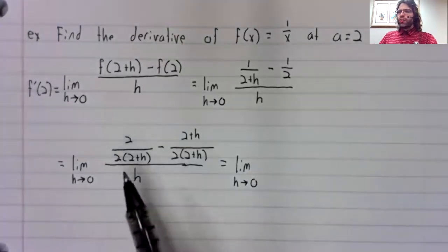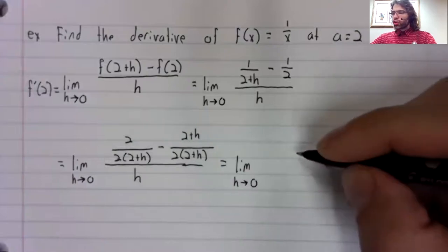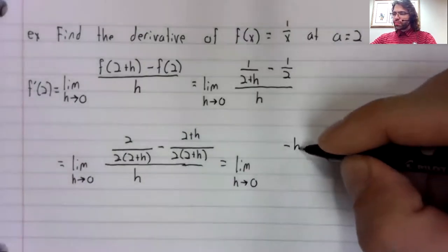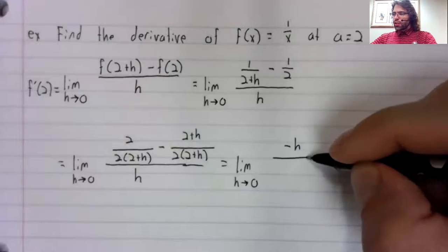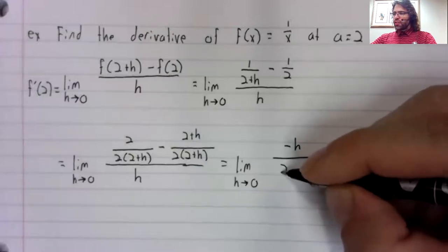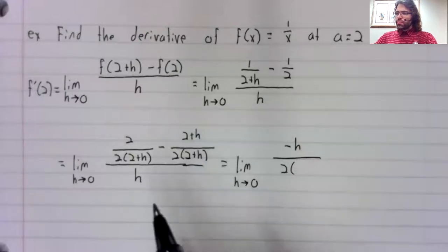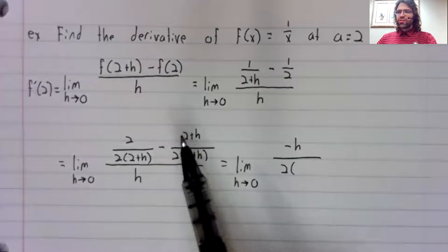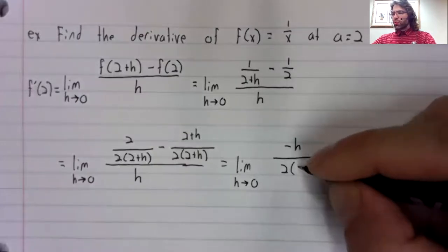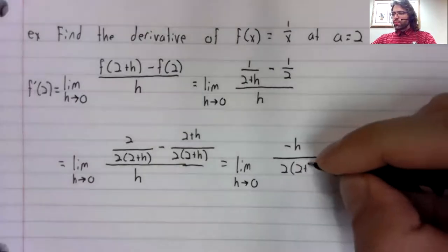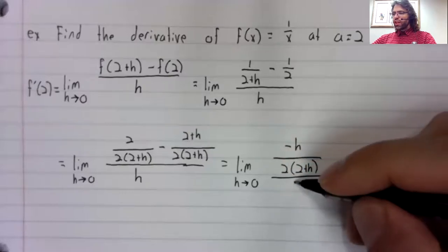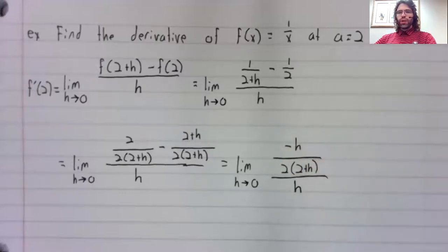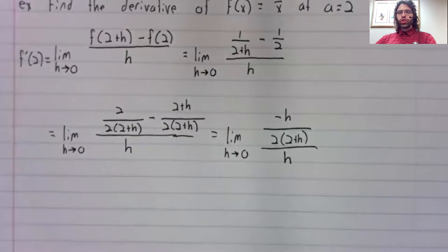And when we do this subtraction, the 2 and the negative 2, this and this, cancel. And we're just left with negative h.